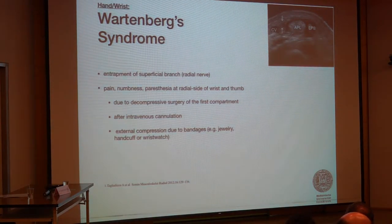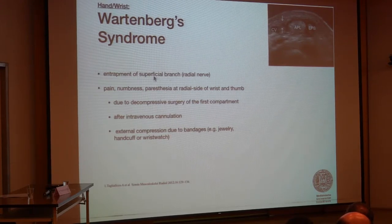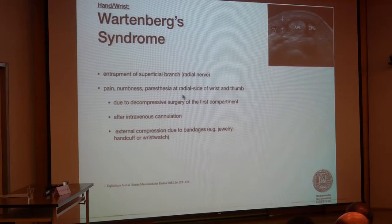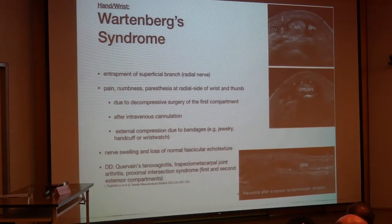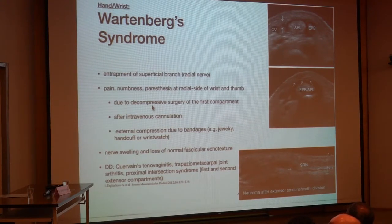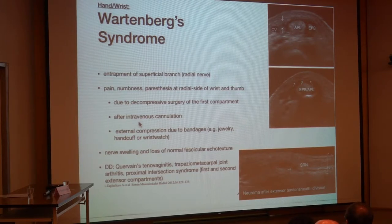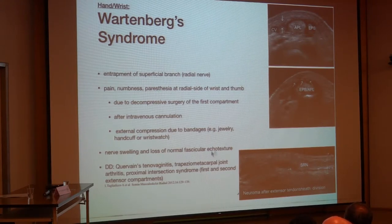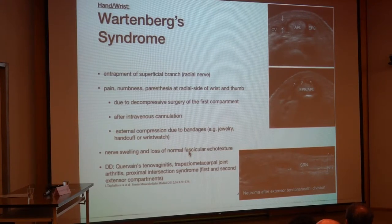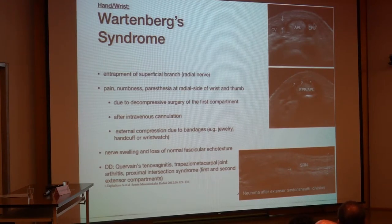Coming to the radial nerve at the level of the wrist: this is the so-called Wartenberg syndrome. It affects the superficial branch of the radial nerve and results in pain, numbness, and paresthesia along the radial side of the wrist and the thumb. It is mainly affected after surgery, after decompression of the first extensor compartment, after intravenous cannulation, or due to external compression from watches and jewelry. It results in nerve swelling and loss of normal fascicular echotexture of this very small nerve.